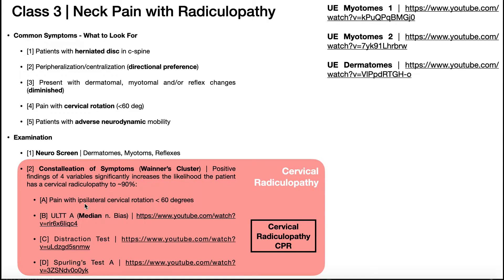Three movements will close down an intervertebral foramen: neck extension, ipsilateral side bending, and ipsilateral rotation. For a right-sided radiculopathy, that would be extension, right side bending, and right rotation. If instead talking about a left radiculopathy, it would be left rotation, left side bending, and extension. These three movements are more likely to cause radicular symptoms because they close down the neural foramen and create less space for the nerve root.